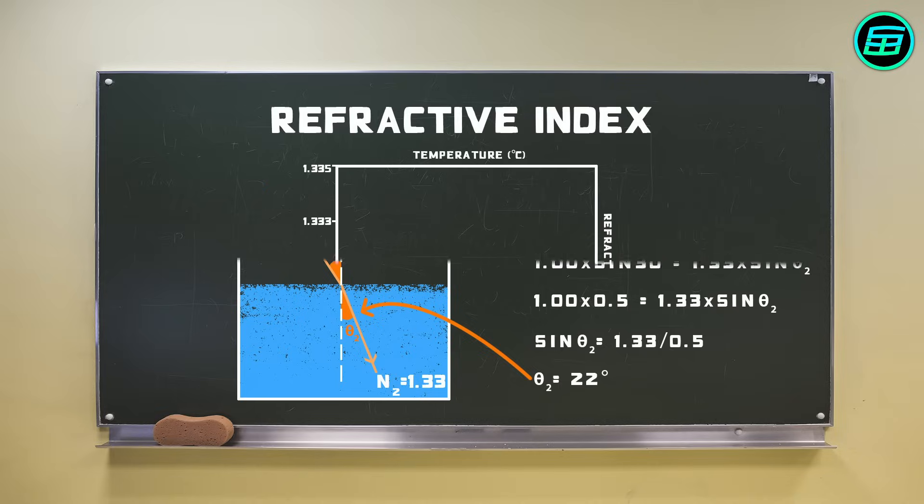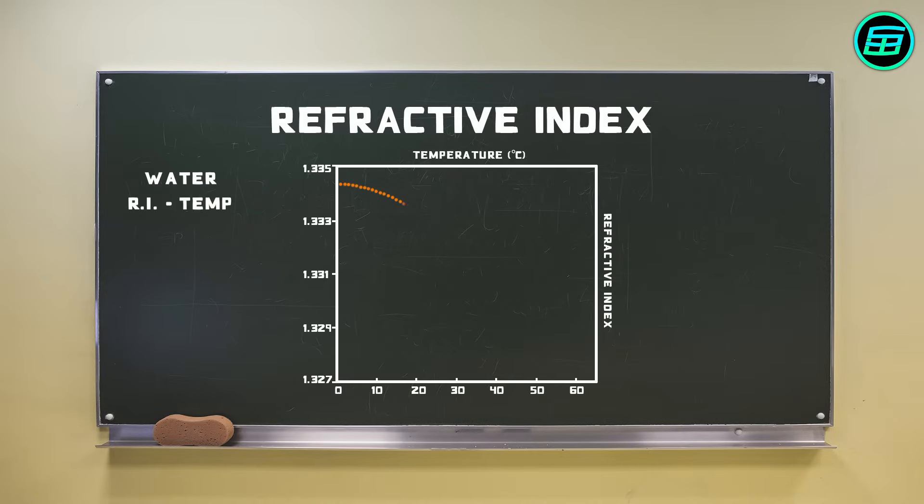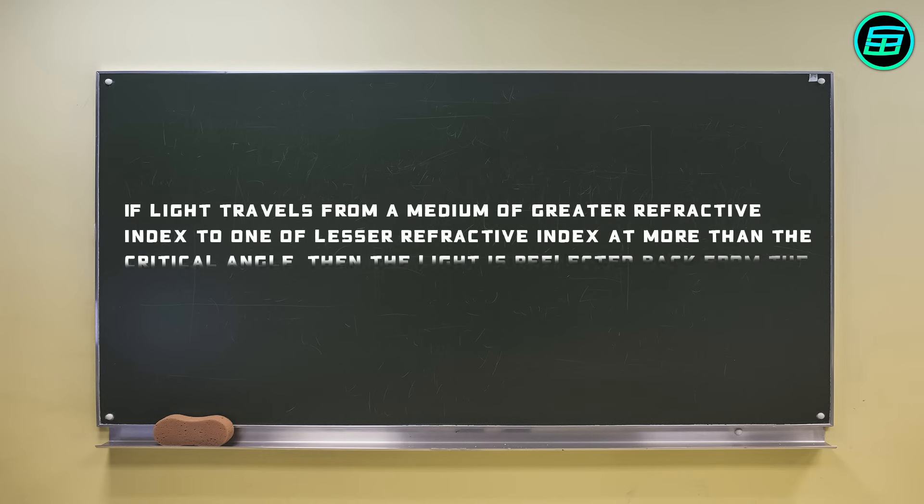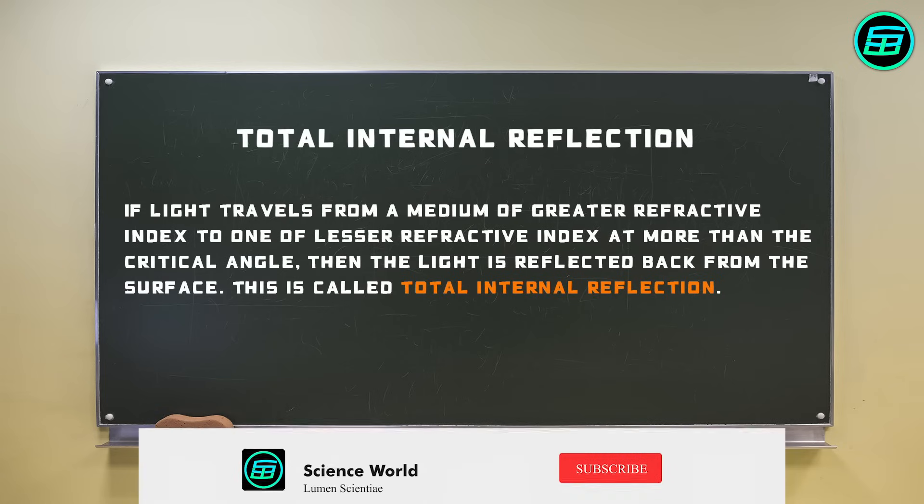The refractive index depends on temperature, so if air heats up or cools down, its refractive index changes. If light travels from a medium of greater refractive index to one of lesser refractive index at more than the critical angle, then the light is reflected back from the surface. This is called total internal reflection.